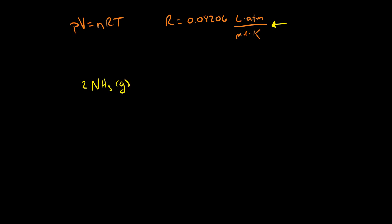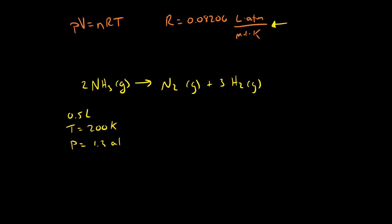If we have two equivalents of ammonia gas decomposing to produce one nitrogen gas and three equivalents of hydrogen gas, and we are told that ammonia is confined in a flask that's exactly 0.5 liters at a temperature of 200 Kelvin at a pressure of 1.3 atmospheres — our goal is to figure out what pressure of nitrogen and hydrogen can be produced if ammonia decomposes with 100% yield. The temperature and volume don't change.